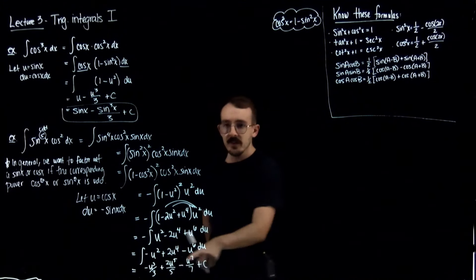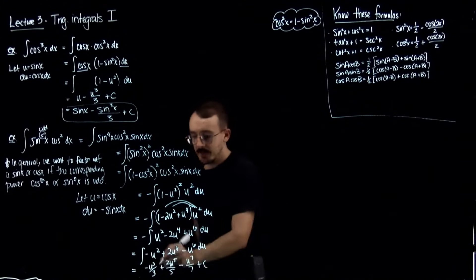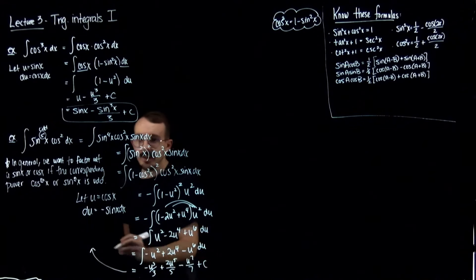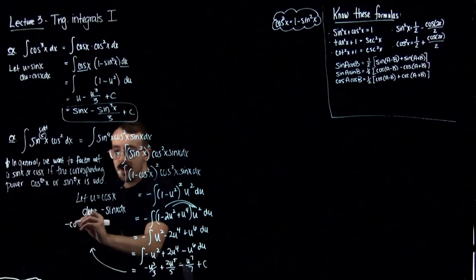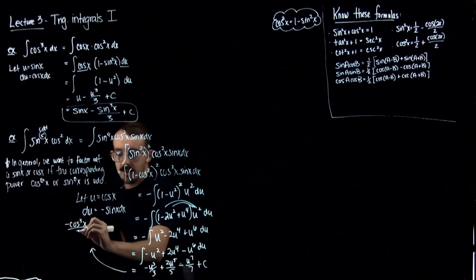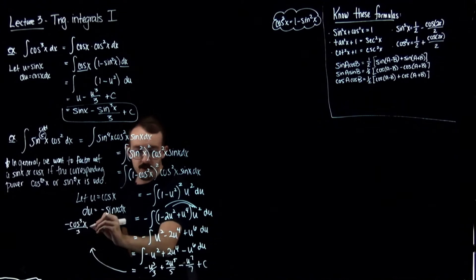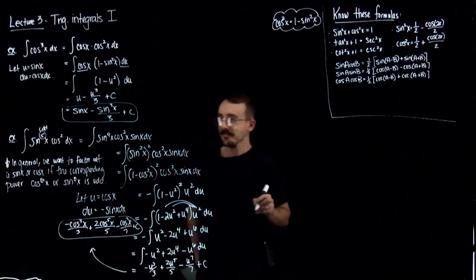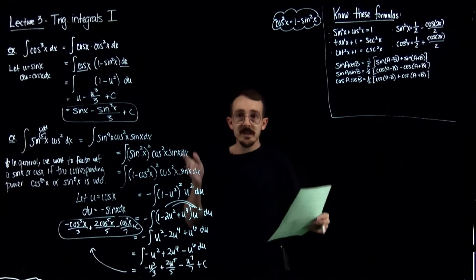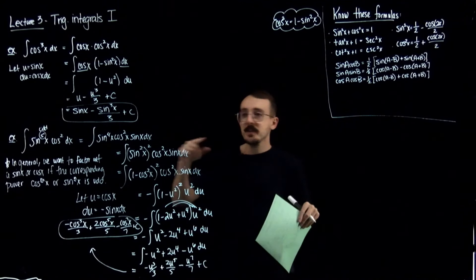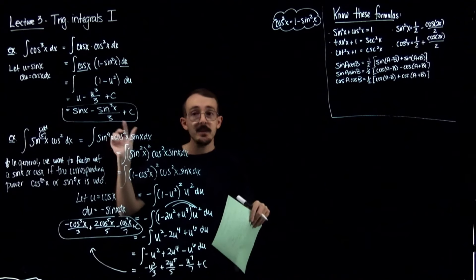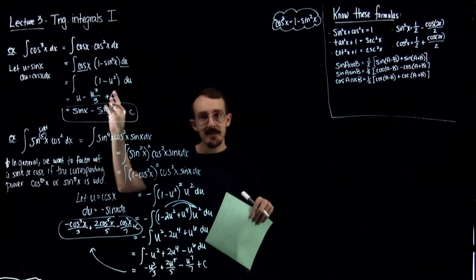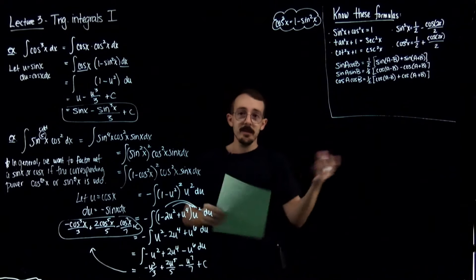For my final answer, I replace all the u's with cosine. So this becomes negative cosine cubed over three plus two cosine to the fifth over five minus cosine to the seventh over seven plus c. What you really want to see with these sine-cosine integrals is that at least one of those powers is odd. If at least one of them is odd, you can do this process: remove one of them and turn the other into the other trig function using the Pythagorean identity.